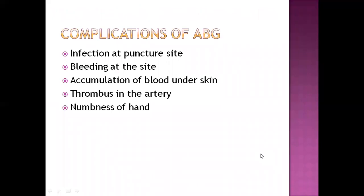Complications of arterial blood gas analysis include infection at puncture sites if insertion is done incorrectly, bleeding at the site especially if the patient has coagulopathy or is on anticoagulant medication, accumulation of blood under the skin, thrombus deposit in the artery, and numbness of the hand which may occur for a few hours to days if the needle insertion is not done properly.